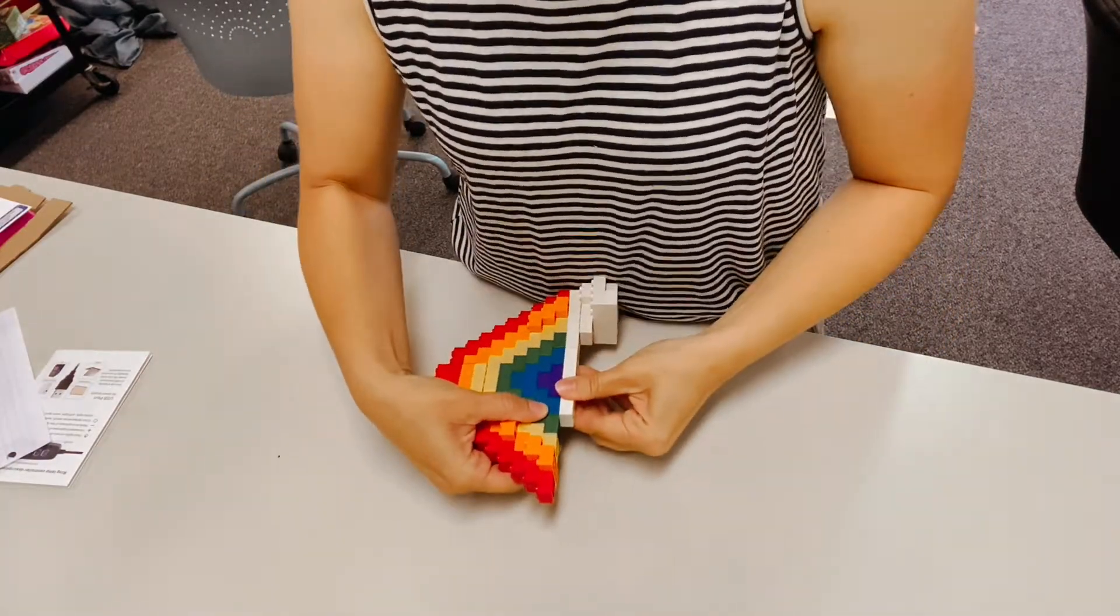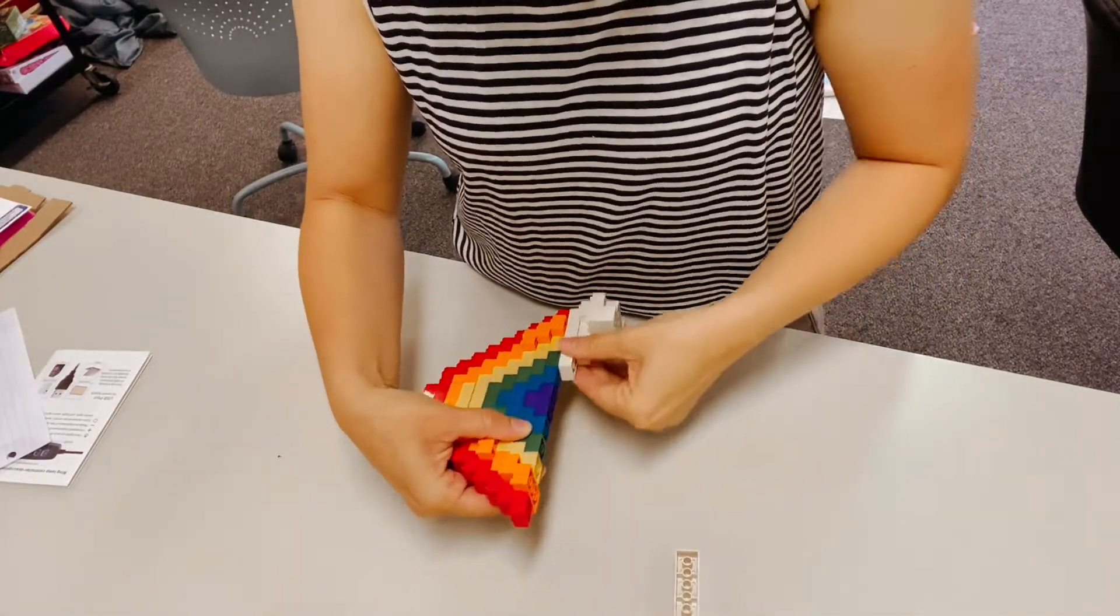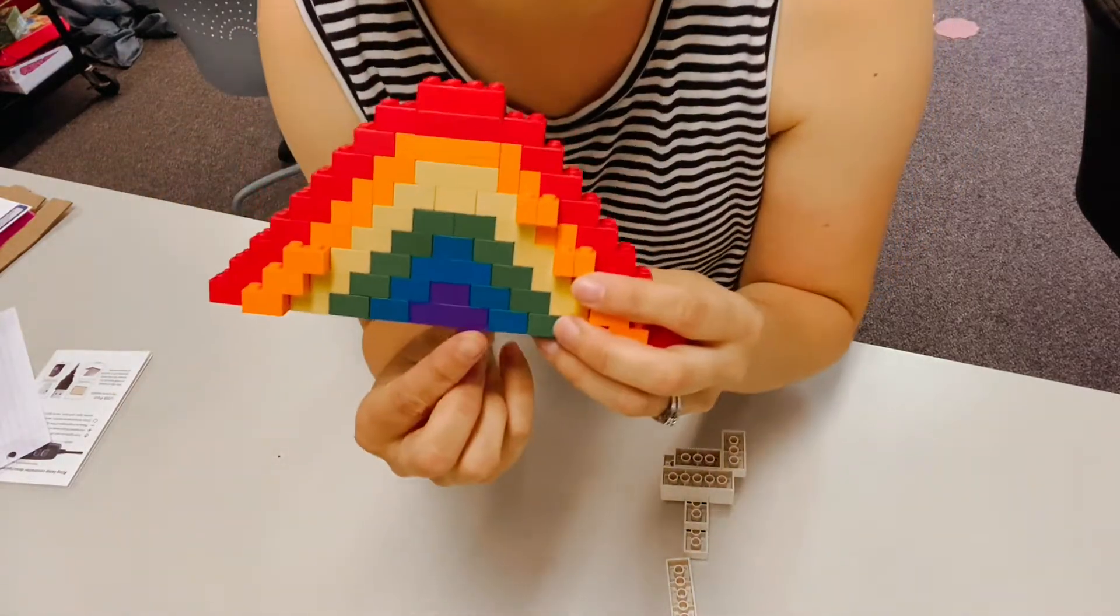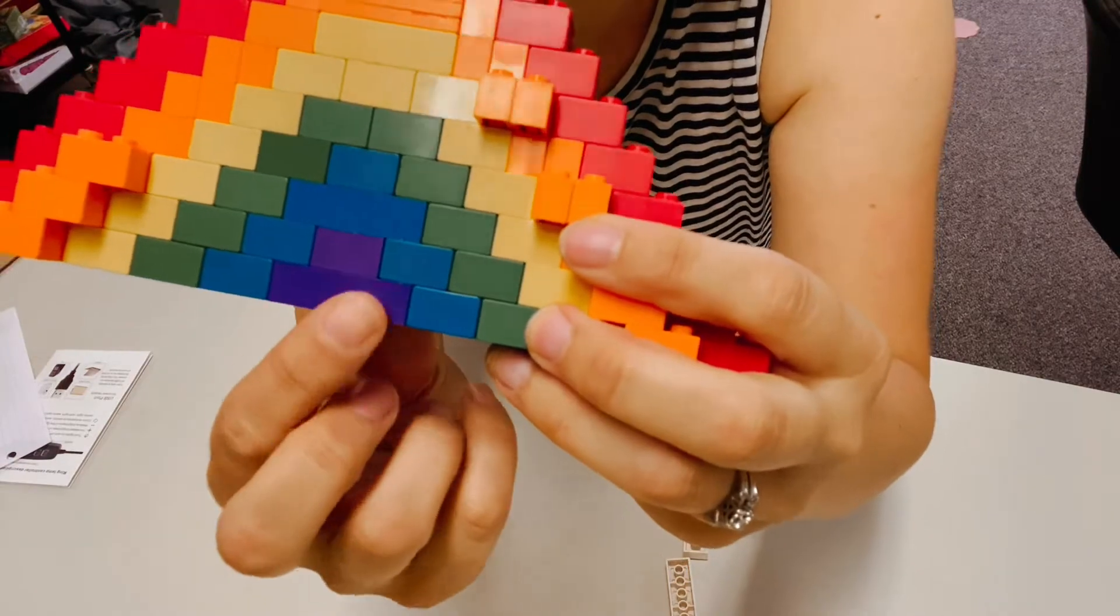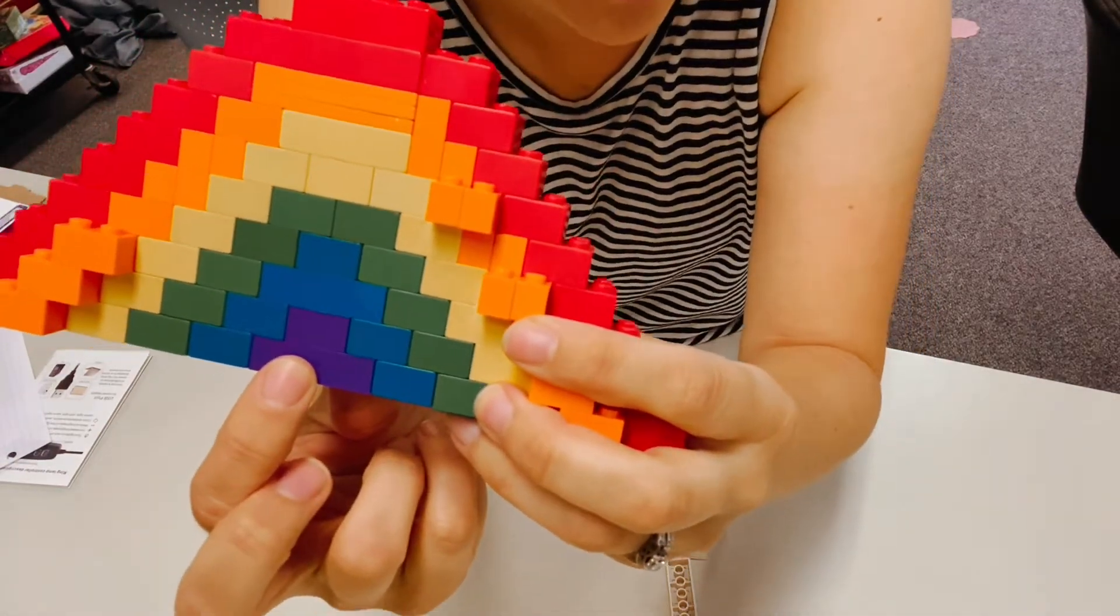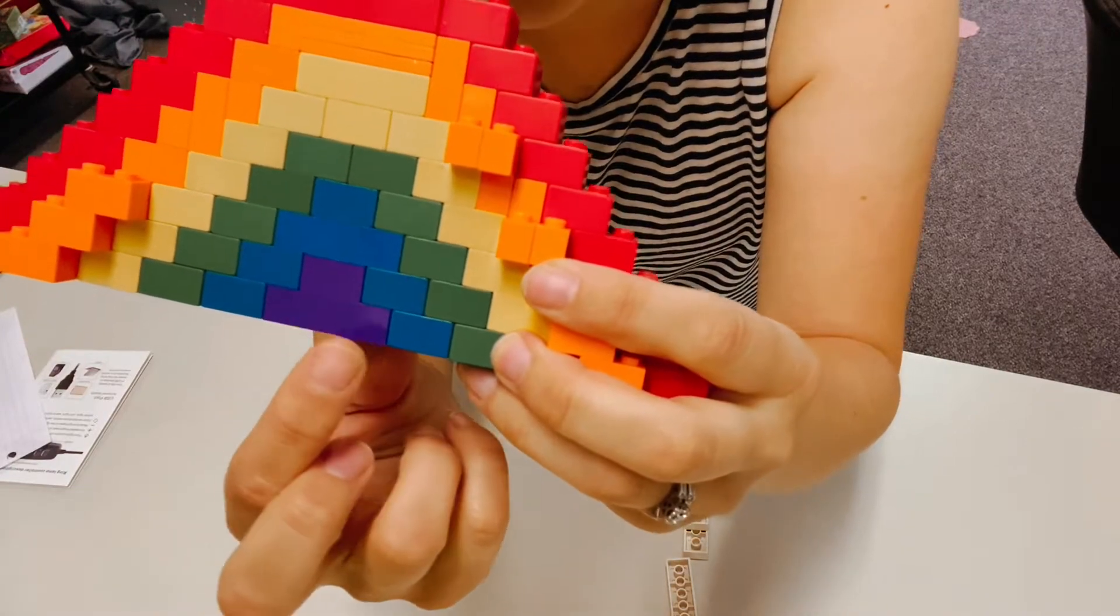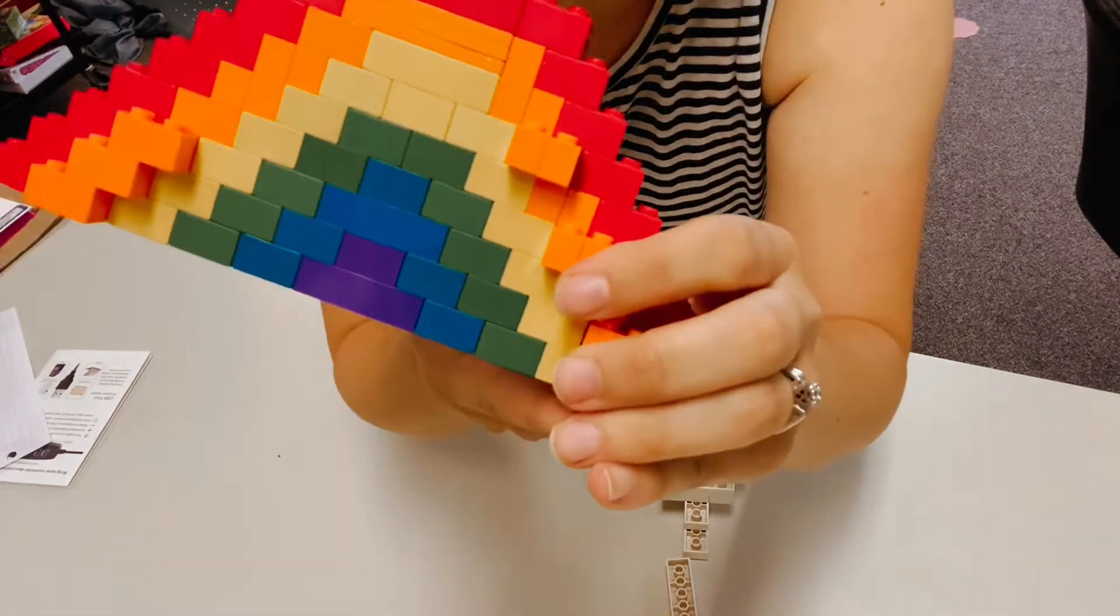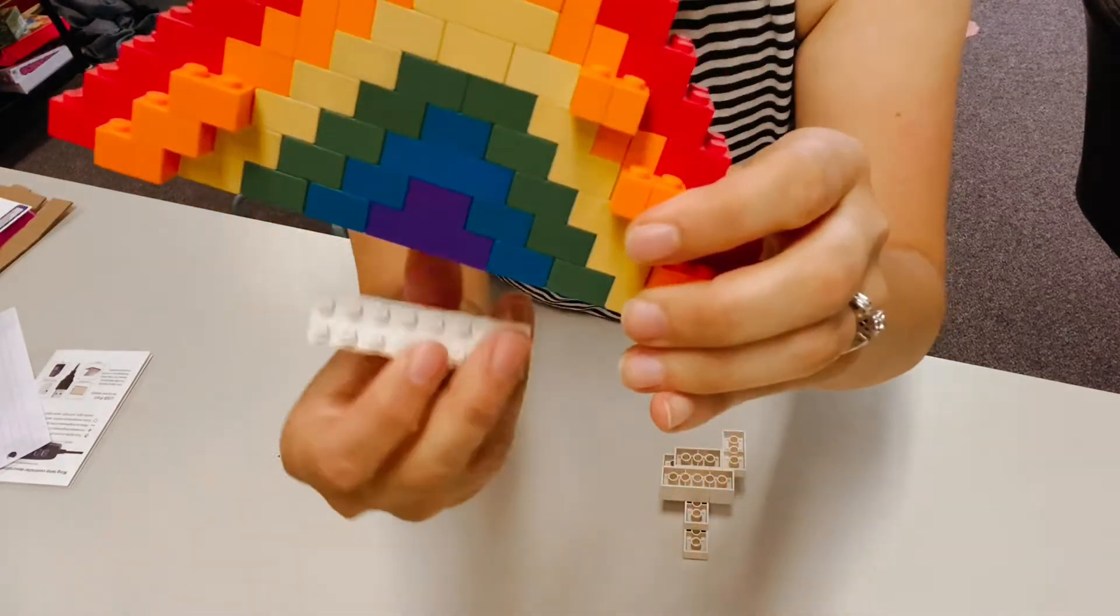Then you're going to have the purple. You can kind of see you could do two different pieces or you can do a longer purple for this one. So you're either going to need two or three pieces, and you're going to start that right on top of those white clouds.